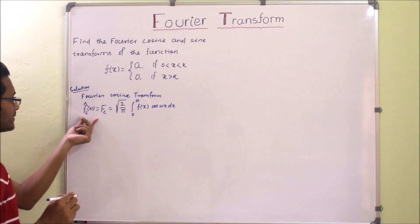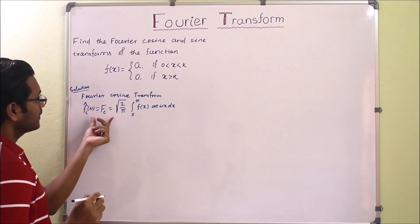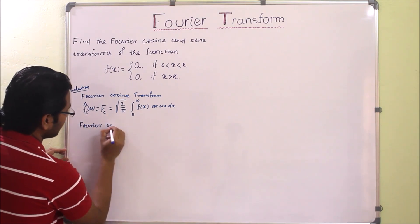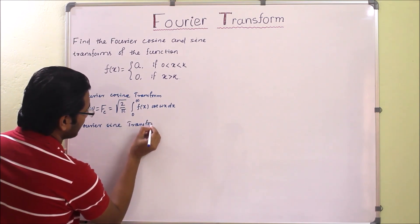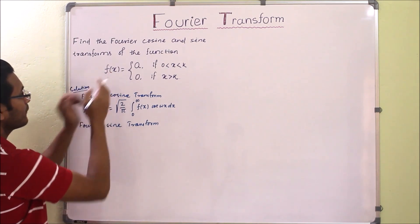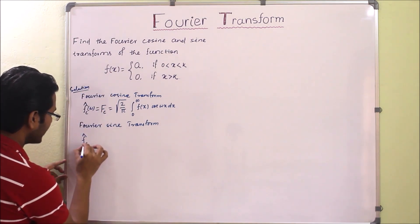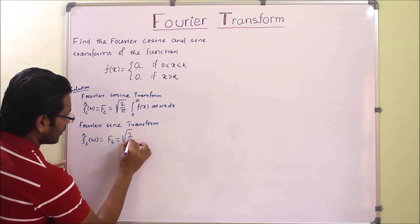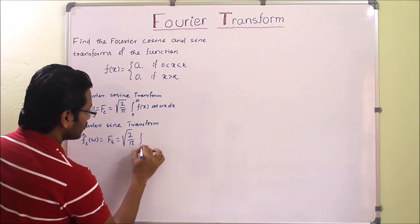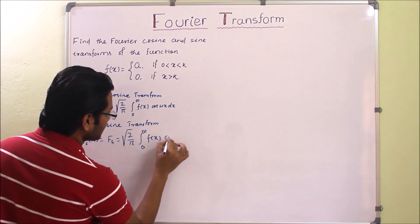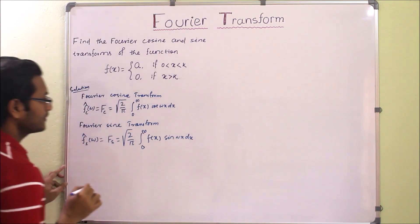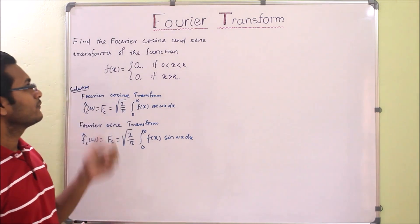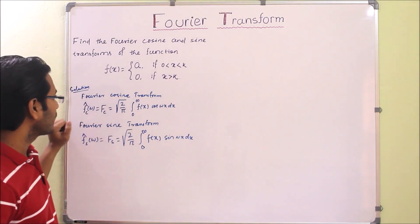The function we get after Fourier transformation will be in terms of w. Similarly, the Fourier sine transform of f(x) is F_s(w), which equals the square root of 2 over pi, times the integral from 0 to infinity of f(x) sin(wx) dx. If you don't know how to derive these formulas, see lecture 1 of the Fourier transform playlist.